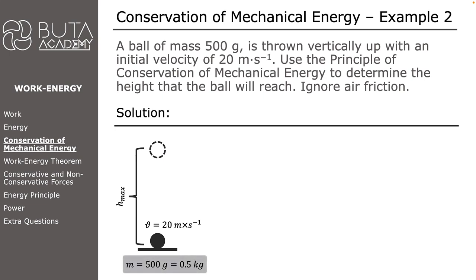The mass of the object is 500 g. As we can't use grams in our calculations, we convert it to kilograms. 500 g equals 0.5 kg. The velocity of the ball on the ground is 20 m per second.